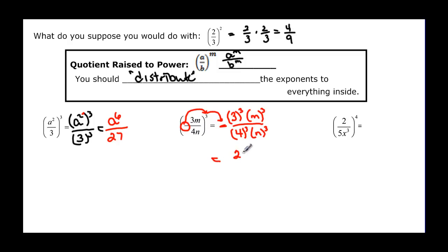3 cubed is 27. M cubed is just going to be M cubed. 4 cubed is 64, and n cubed is just going to be n cubed.